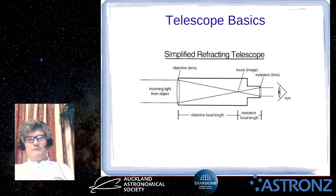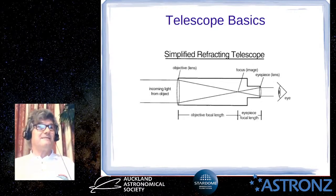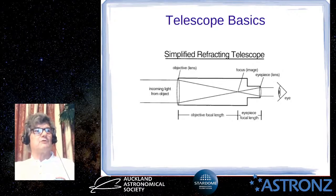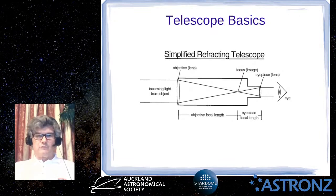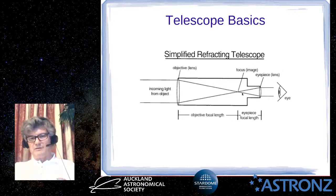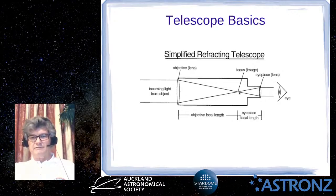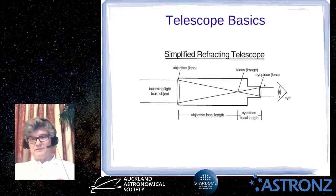Moving on to telescope basics and their effect on visual observation. This diagram shows a simplified refracting telescope — real ones will have a more complex objective lens like a doublet or triplet. The main thing is that the objective lens brings light to a focus, and then you use an eyepiece to magnify the focused image. The focal length of the objective is the distance between the objective and the focus, and the focuser allows the eyepiece position to be adjusted.